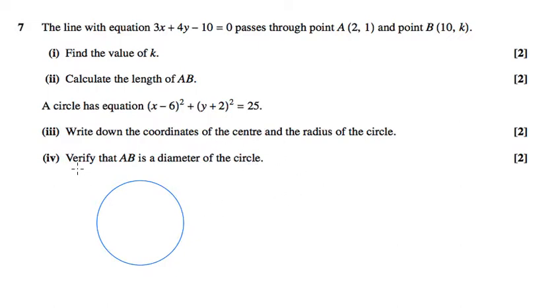Part 4 asks us to verify that AB, which we have the coordinates up here, A and B. 2, 1, well it wouldn't be that way round would it? 2, 1, and 10, -5, are actually the diameter of a circle.